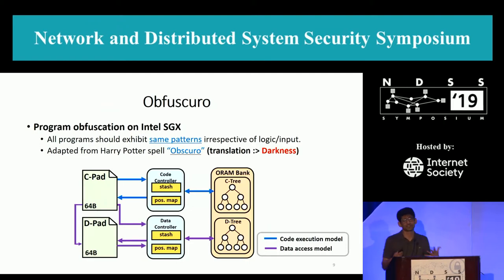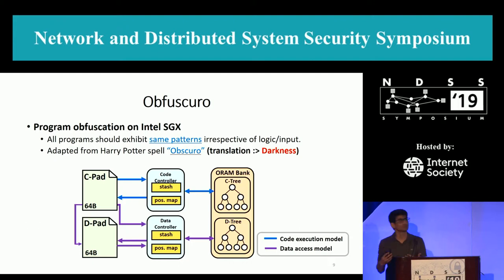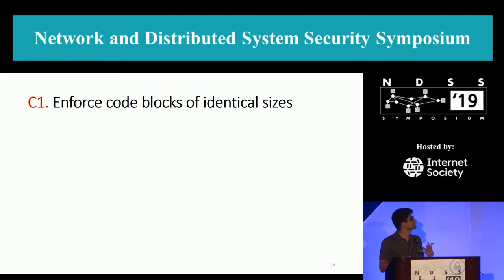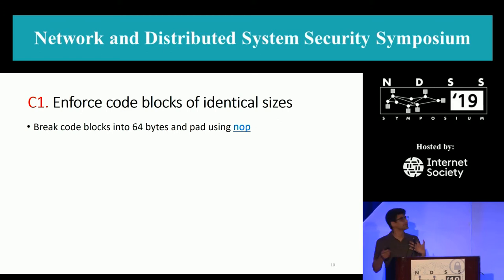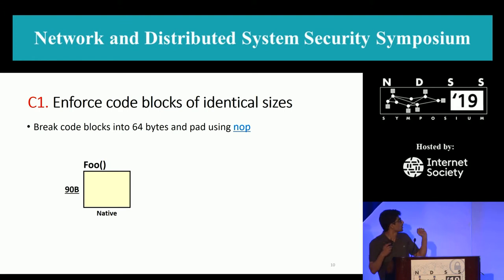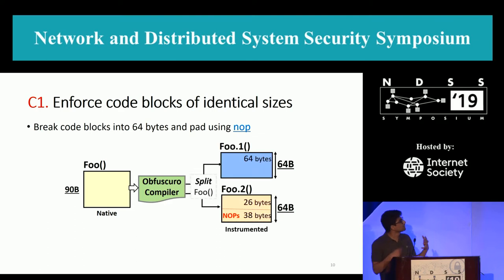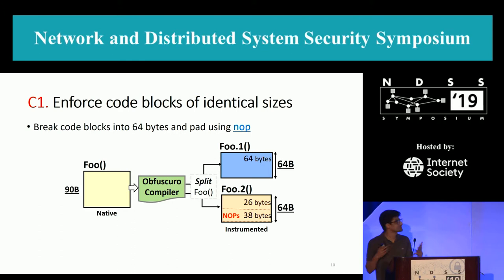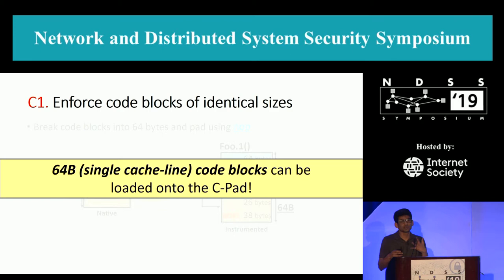Obscuro is a program obfuscation system on Intel SGX. The entire idea is that all programs should exhibit the same pattern irrespective of their logic or whatever input is provided. It's named after a Harry Potter spell — Obscuro — which has the Latin translation of darkness. For the first challenge, we enforce code blocks of identical sizes because we want all code blocks to be 64 bytes. We break code blocks into 64 bytes and use NOP instructions to pad them. So a native foo code block of 90 bytes gets split into foo1 (64 bytes) and foo2 (64 bytes with 38 bytes of padded NOP instructions).